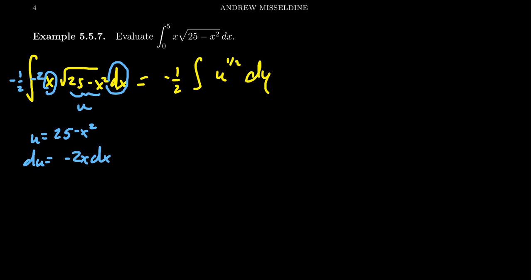Continuing on, by the power rule for antiderivatives, the antiderivative of u to the 1 half becomes u to the 3 halves. You raise the power by 1, divide everything by 3 halves, plus a constant.